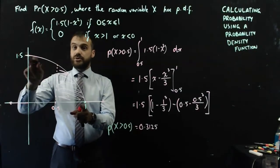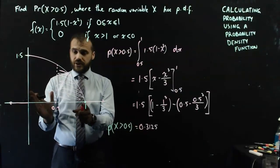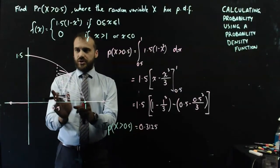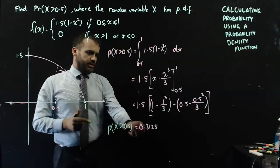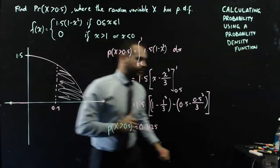Now the full area must be equal to 1 because it's a probability density function. And you can see that this is about a third of the full area of my quadratic, so that makes sense looking at that answer.